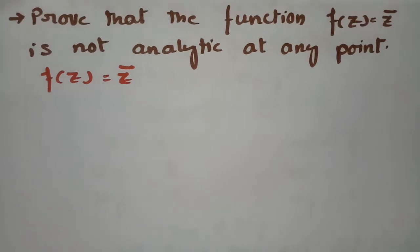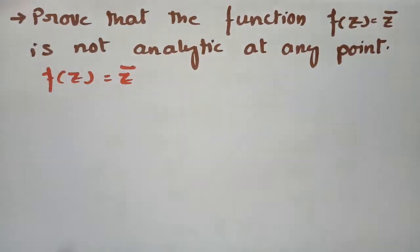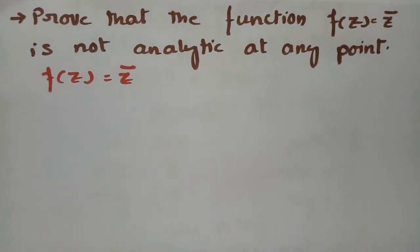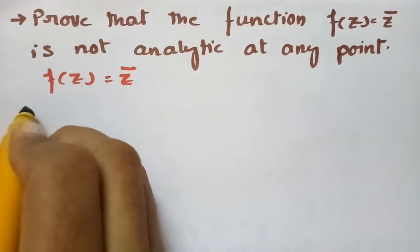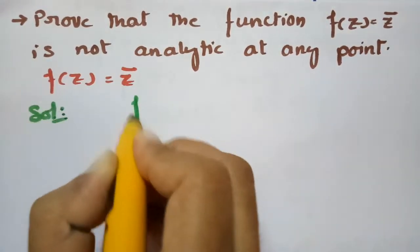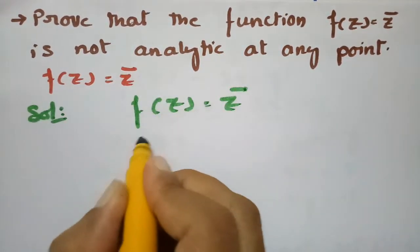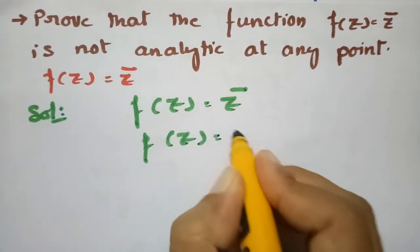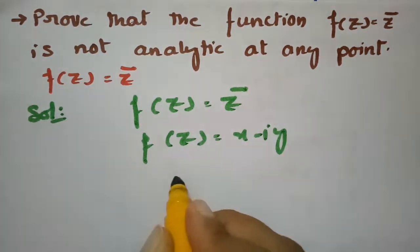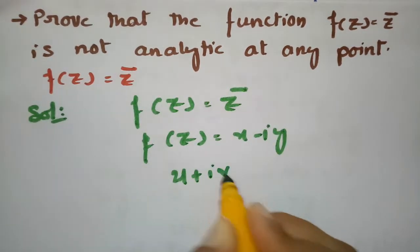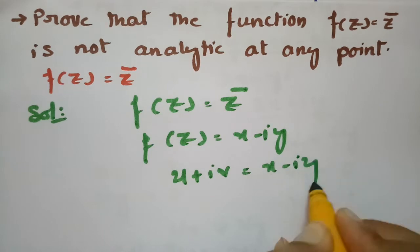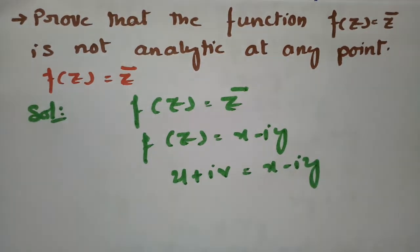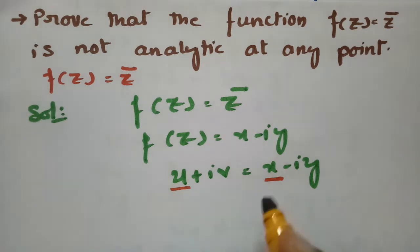The next question: f(z) = z̄. Since z̄ = x − iy, we have f(z) = x − iy. Comparing with u + iv = x − iy, the real part is x and the imaginary part v is equal to minus y.